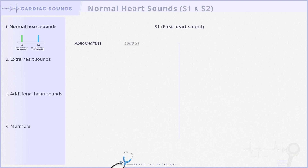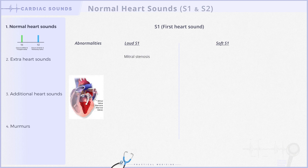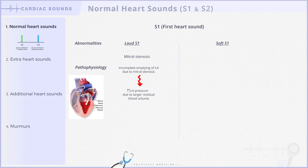Some diseases can amplify S1 while others may cause it to diminish. S1 is loud in cases of mitral stenosis, because the narrowed mitral valve hinders complete emptying of the left atrium during ventricular diastole. The larger residual volume of blood elevates left atrial pressure, and as a result, S1 is loud due to heightened closure of the mitral valve against the elevated left atrial pressure.